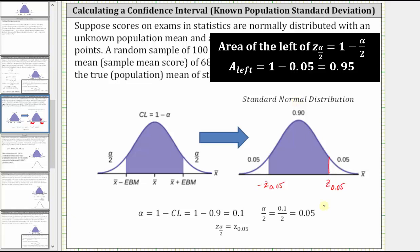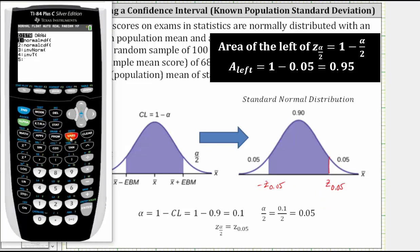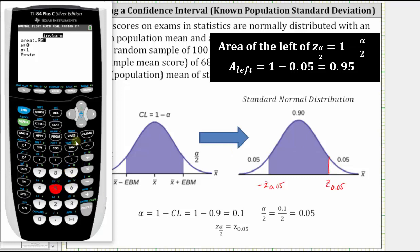To find the z-score on the TI-84, we press second vars for the distribution menu, then option three for inverse norm. The area to the left of the z-score is 0.95. Because we have the standard normal distribution, mu is zero and sigma is one. We press enter and the z-score given by z sub 0.05 is approximately 1.645.